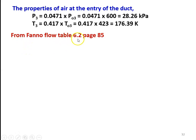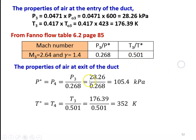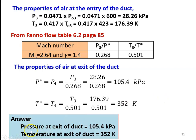From the fanno flow table, table number 6.2, page number 85, for Mach number M3 equal to 2.64 and gamma equal to 1.4: P3 by P star equal to 0.268, T3 by T star equal to 0.501. Since the flow is choked at the exit, P star equal to P4 and T star equal to T4. So P4 equal to P3 divided by 0.268, equal to 28.26 divided by 0.268, equal to 105.4 kPa. T4 equal to T3 divided by 0.501, equal to 176.39 divided by 0.501, equal to 352 Kelvin. Answer: exit pressure 105.4 kPa, exit temperature 352 Kelvin.